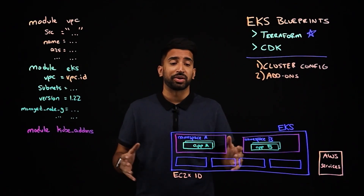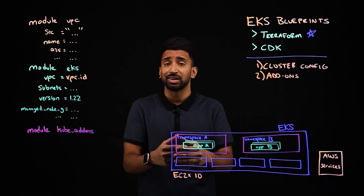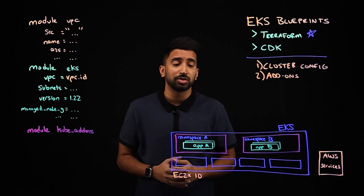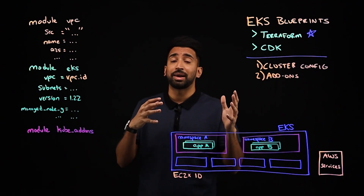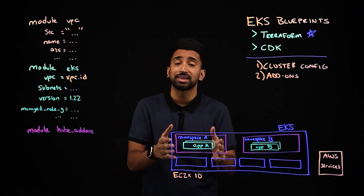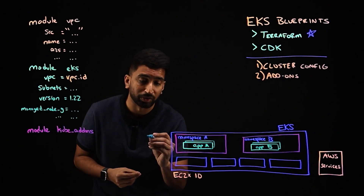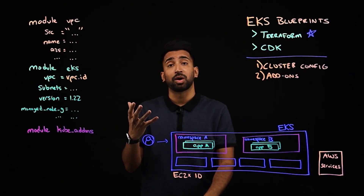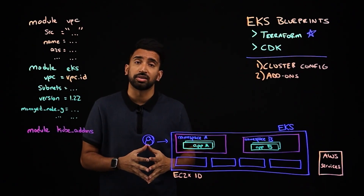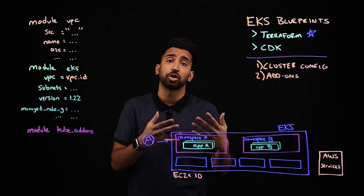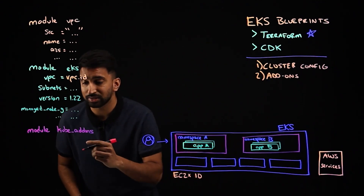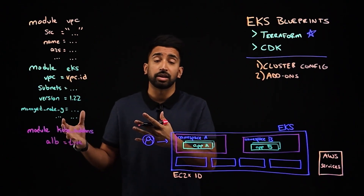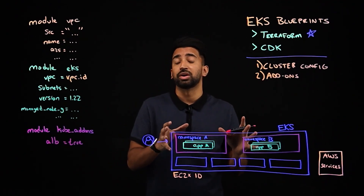Let's talk about the cluster diagram. I have an EKS cluster running on EC2, distributed across 10 nodes, with a couple of namespaces and some AWS services. Let's say I want to expose our application to the outside world — users want to be able to access that application, so I might want a load balancer. There's an add-on for that — you can set something like enable ALB equals true, run a Terraform apply, and it'll spin up the ALB add-on extension to your EKS cluster.